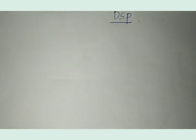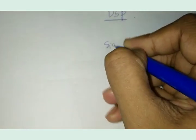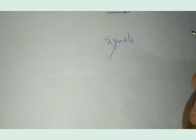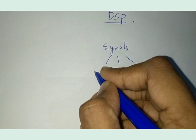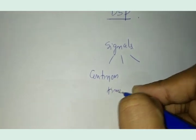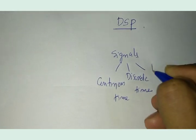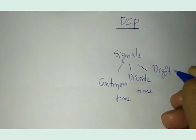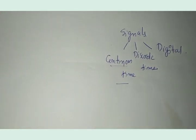Before going into that, let me briefly explain what is a digital signal. Based on the time parameter, you can classify signals into three categories broadly: continuous time signal, discrete time, and digital.